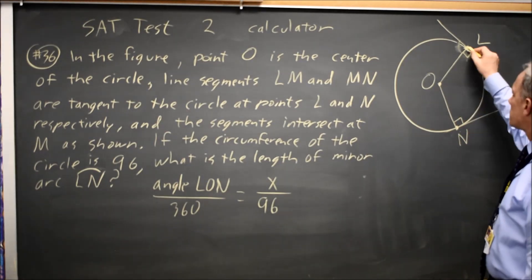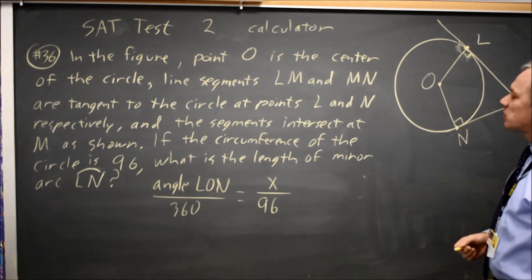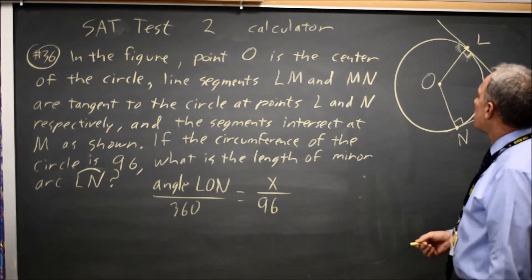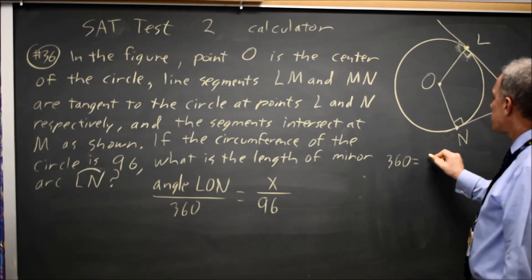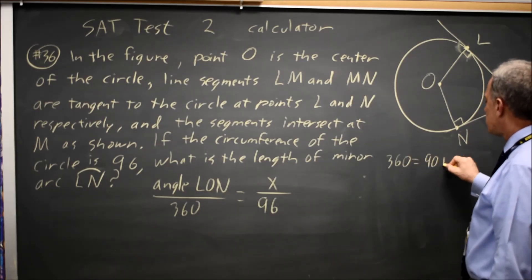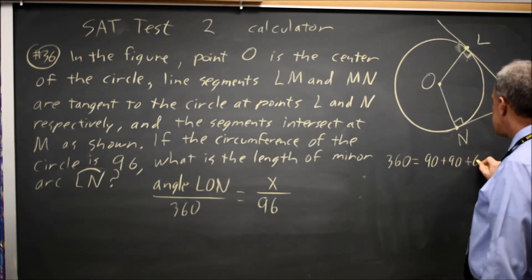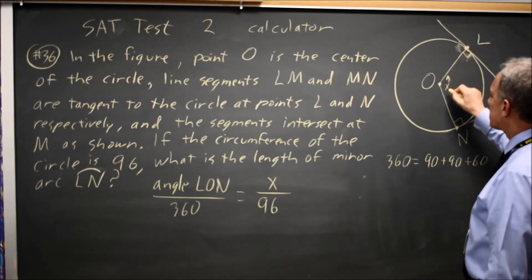So I have a quadrilateral here, and the angles of a quadrilateral add up to 360 degrees. And we know that there's 90 plus 90 plus 60 plus this angle, which I'm going to call X.